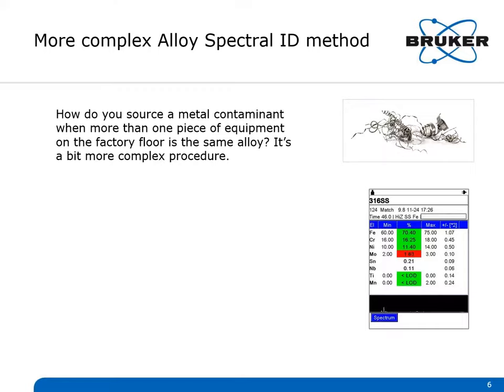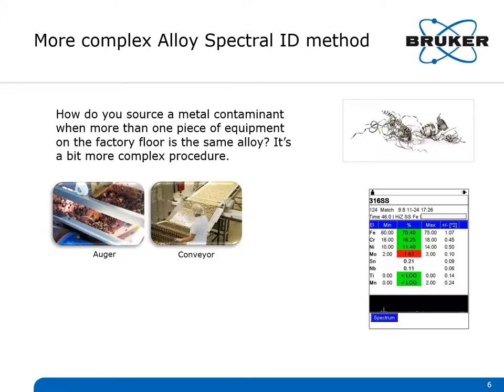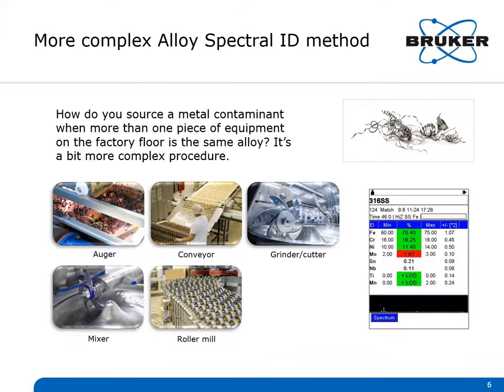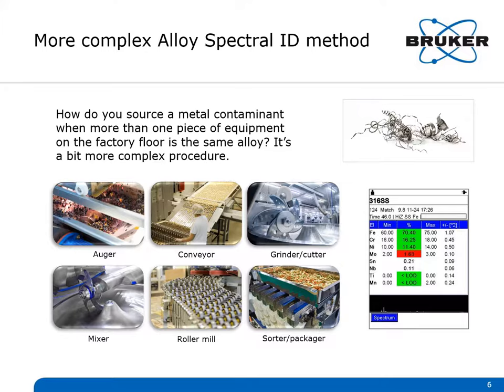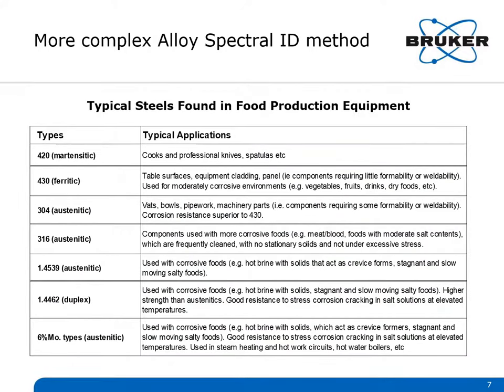But what happens if the metal contaminant identified as 316 stainless steel could be from more than one source on your production floor? What if your auger, conveyor, grinder, mixer, roller mill, and sorter are all made of 316 stainless? The procedure to source the contaminant is then more complex. It's important to be familiar with the alloys used for food production equipment, as they provide important characteristics for sanitation and protection from corrosive foods, high temperatures, moisture, and pressure. If there is more than one possible source, you need another method to find the actual source.